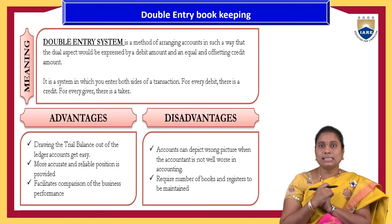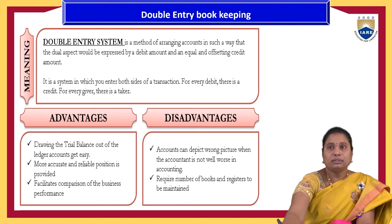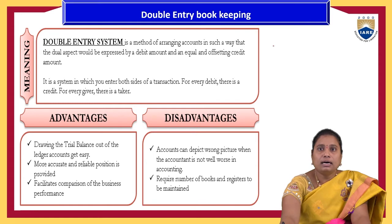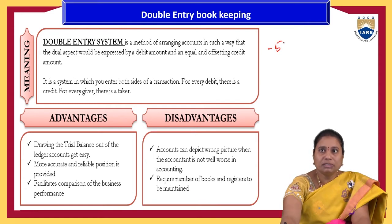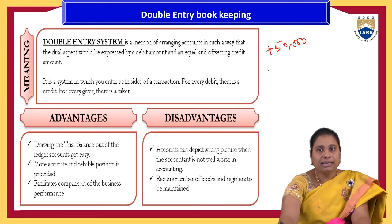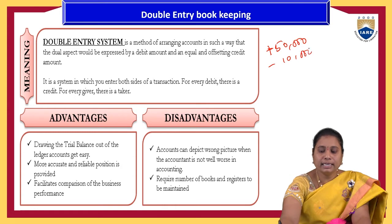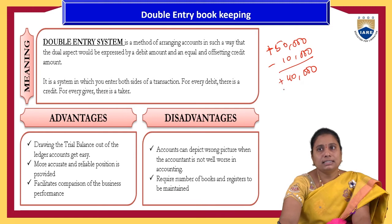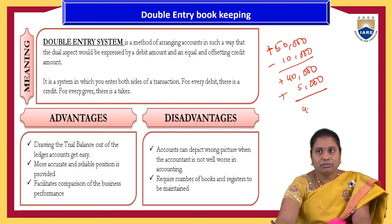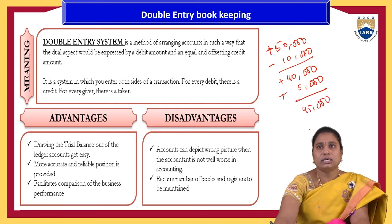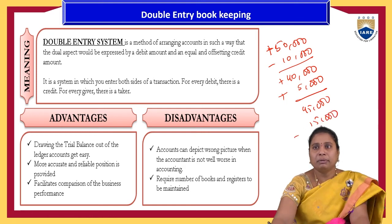To understand double entry, we should first know what single entry mechanism is. For example, in a household, if a person earns Rs. 50,000 for his family, that is a credit. If he spends Rs. 10,000 on rent, the remaining balance is Rs. 40,000. If he receives Rs. 5,000 interest from bank investments, that is a credit bringing the total to Rs. 45,000. If he then spends Rs. 15,000 on children's fees, the balance reduces to Rs. 30,000.